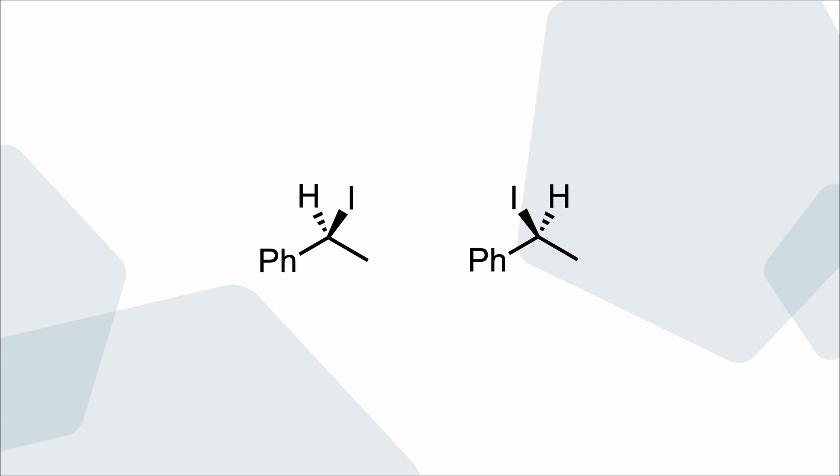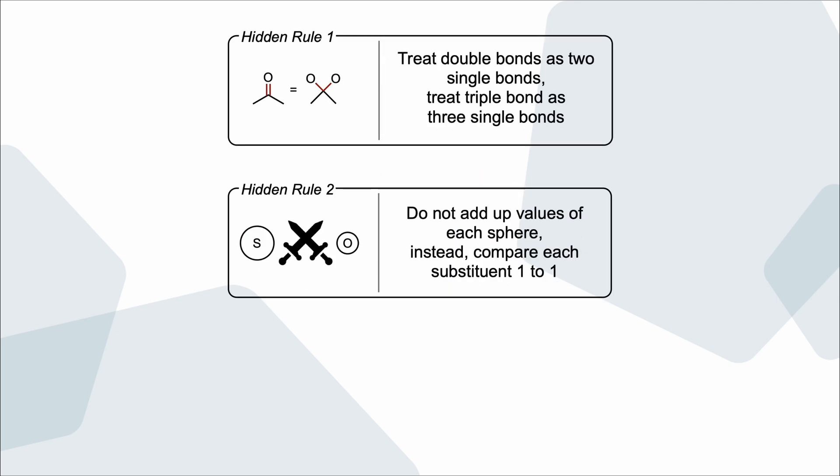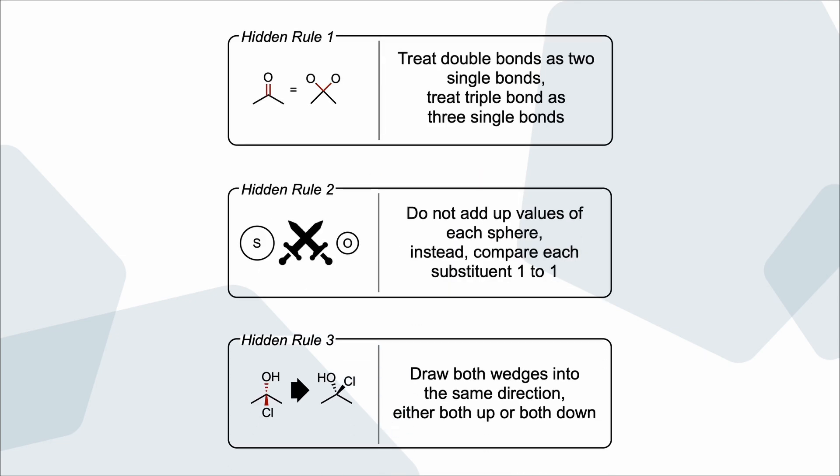This structure is now unambiguous and allows us an easy and correct determination of the absolute configuration. This rule also helps us determine the Newman or Fischer projections more easily. So definitely consider this for your future organic chemistry tasks.